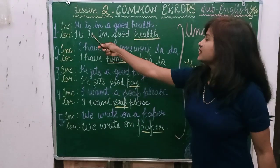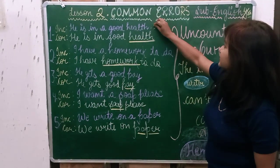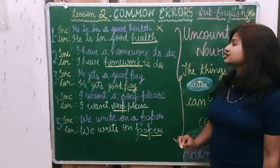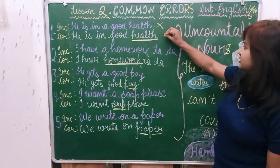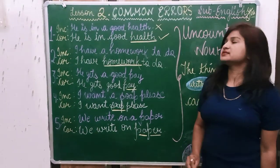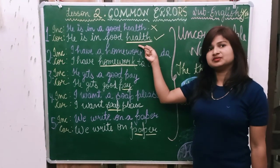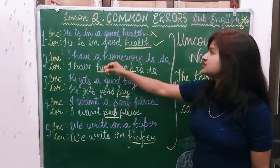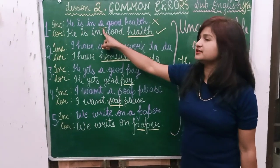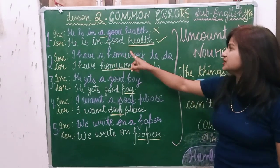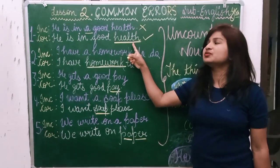Incorrect: 'He is in a good health.' This is an incorrect sentence. The correct sentence is: 'He is in good health.' Why is it correct? Because Health is an Uncountable Noun, we do not use the article 'A' before it. In the first incorrect sentence there is article 'A', and we already know we do not use article 'A' when talking about an Uncountable Noun like Health.